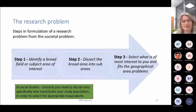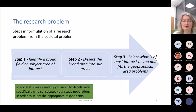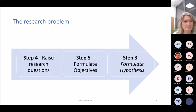When thinking about research problems, the research steps are: first, identify a broad field or subject area of interest; then dissect the broad area into sub-areas; select what is of most interest and fits the geographical area and problem; then raise research questions, formulate objectives, and formulate hypotheses.